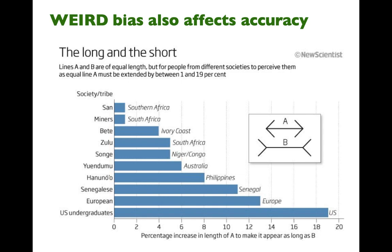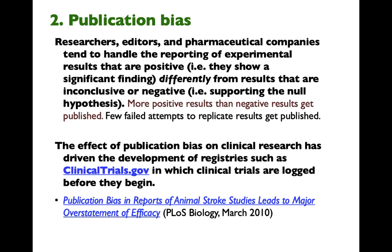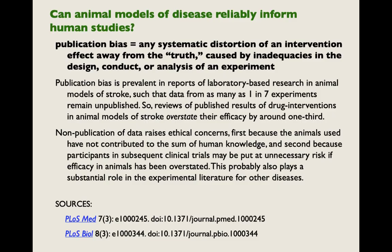What about publication bias? This is where researchers, editors, and pharmaceutical companies tend to handle the reporting of experimental results that are positive — that is, showing a significant finding — differently from results that are inconclusive or negative, supporting the null hypothesis. So more positive results than negative results get published, and few failed attempts to replicate results get published. The effect of publication bias on clinical research has driven the development of registries, such as clinicaltrials.gov, in which clinical trials are logged before they begin.